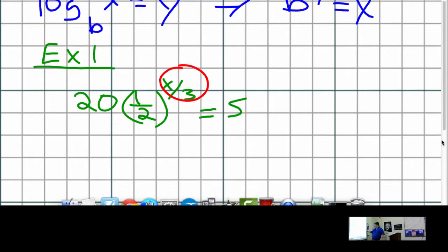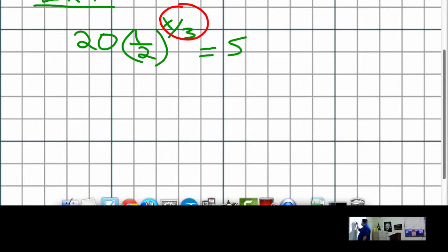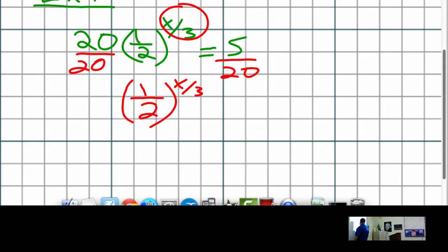But normally what we would do, normally how we would solve this is I would start moving stuff away from the x. So I would divide both sides by 20, and I'd have one half raised to the x cubed, and then 5 over 20 reduces down to one fourth.